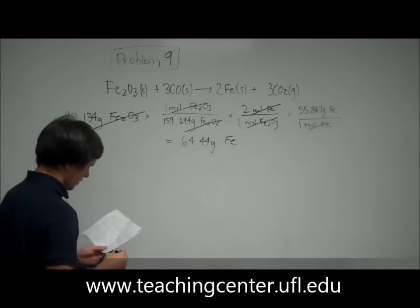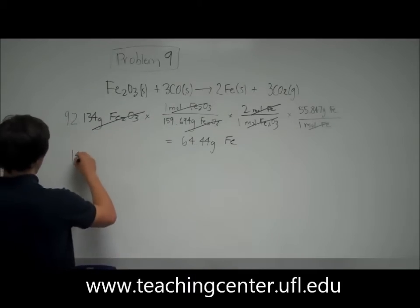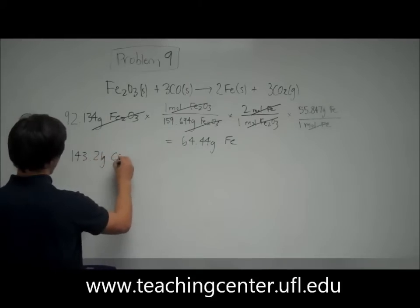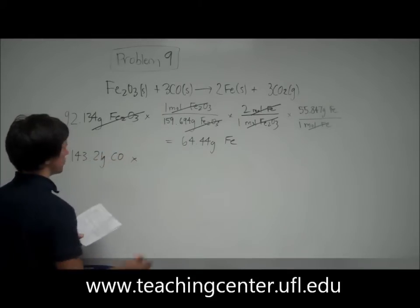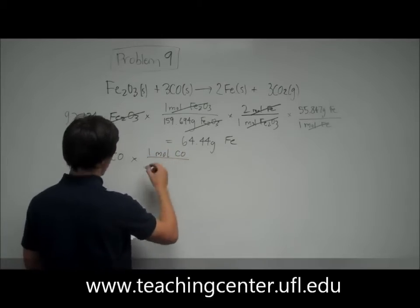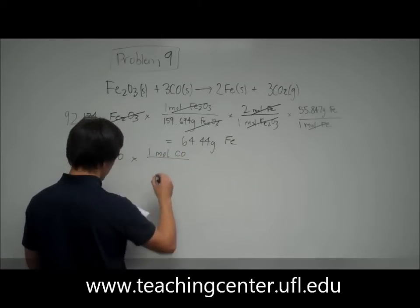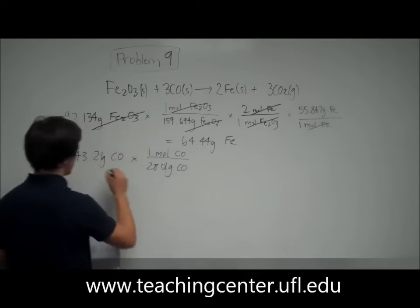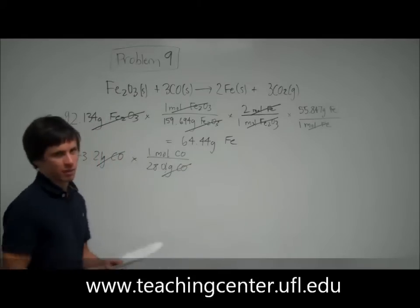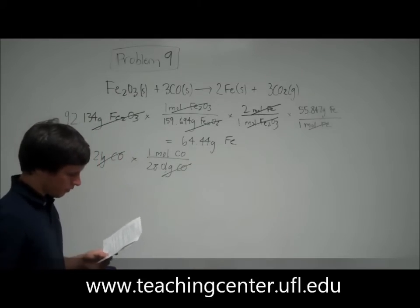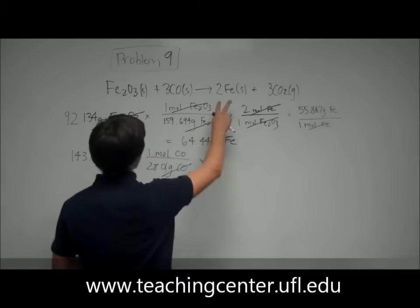So let's test the other one now. So they gave us 143.21 grams of carbon monoxide. So same deal. We're going to have one mole of CO weighs 28.01 grams. You can get that from your periodic table. You don't have to memorize that or anything. You should get a periodic table on your test.